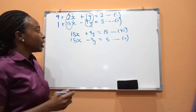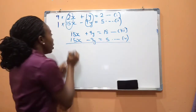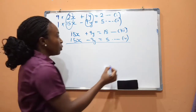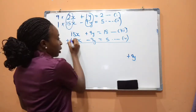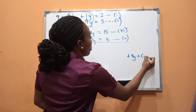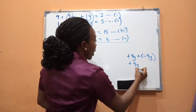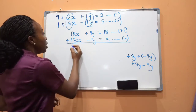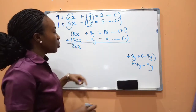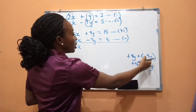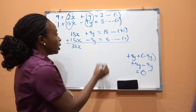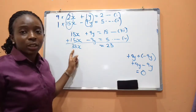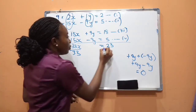Now we need to choose the correct sign. Since we have +9y and −9y, we add the equations so the y terms cancel to zero. Adding: 18x + 15x = 33x, and +9y + (−9y) = 0. So 33x = 18 + 5 = 23. Dividing both sides by 33 gives x = 23/33.